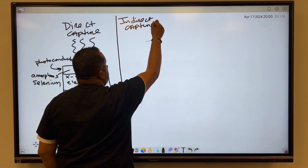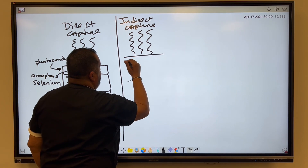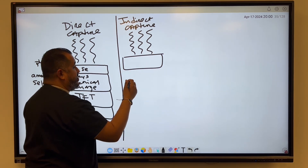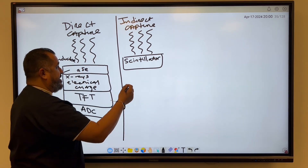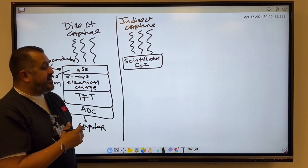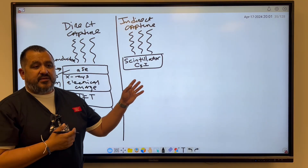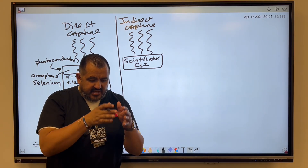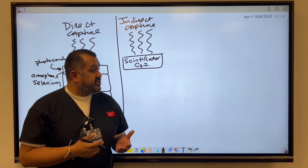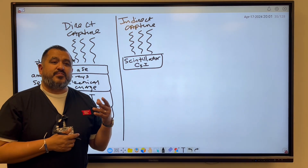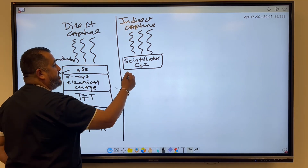Indirect capture, or indirect conversion — same thing. You're going to still have x-ray signal going through the patient, but this time it's going to hit a scintillation material — a scintillator. A scintillator has phosphors, and in this case they're using cesium iodide. Cesium iodide is a common scintillation material. Back in the days we used gadolinium oxy-sulfide, but now we use cesium iodide because when it produces light, the light is focused more in one direction, giving you less light spread. So scintillators are going to produce light.